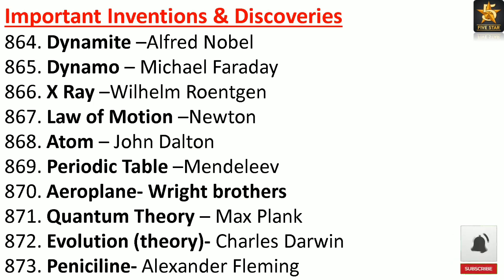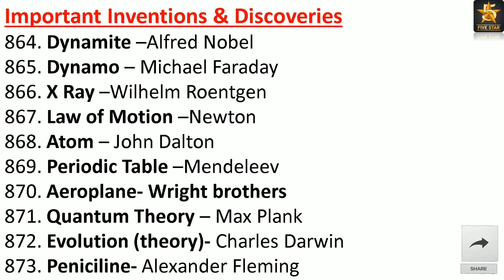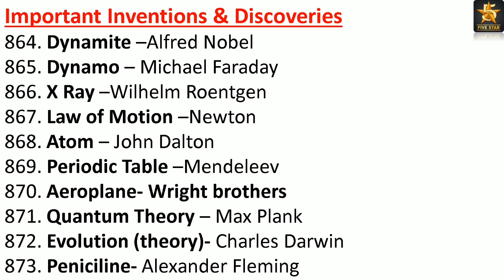Important inventions and discoveries — Dynamite: Alfred Nobel. Dynamo: Michael Faraday. X-Ray: Wilhelm Röntgen. Laws of motion: Newton. Atom: John Dalton. Periodic table: Mendeleev. Aeroplane: Wright Brothers. Quantum Theory: Max Planck. Evolution Theory: Charles Darwin. Penicillin: Alexander Fleming.